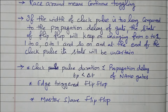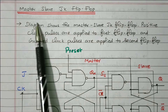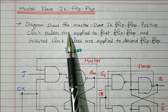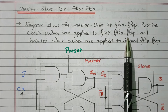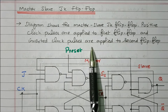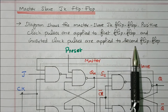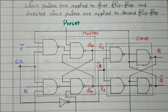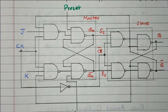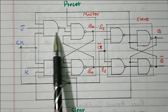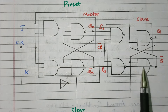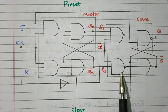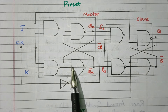In this video we discuss the race-around condition, and now we will see the master-slave JK flip-flop. The diagram shows the master-slave JK flip-flop. A positive clock pulse is applied to the first flip-flop — that is called master — and an inverted clock pulse is applied to the second flip-flop — that is called slave. In the logic diagram, flip-flop 1 has 4 NAND gates and the second flip-flop also has 4 NAND gates. This one is the master, this one is the slave, and both are connected in series.